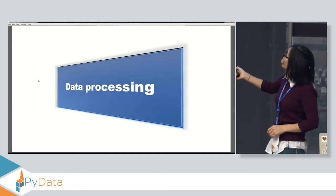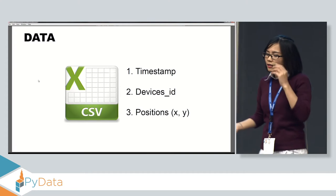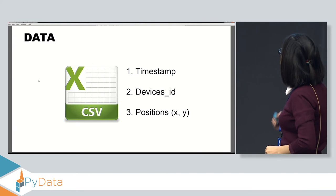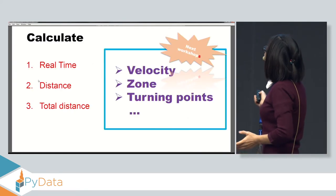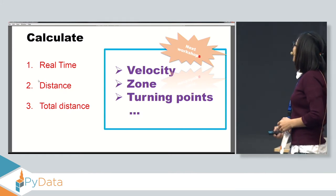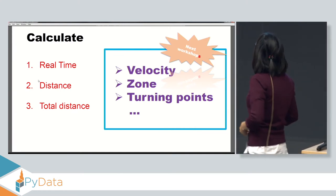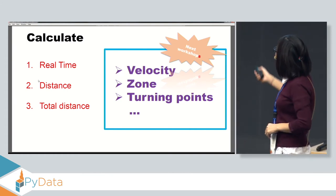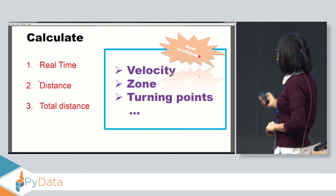Now we try to process the data. Before processing, let's summarize what we have in the original data: timestamp, device ID, X-port, and Y-port. With this data we can calculate real time, distance, total distance, velocity, zone, and turning points. In this workshop, I will focus and help you step-by-step to calculate real time, distance, and total distance.